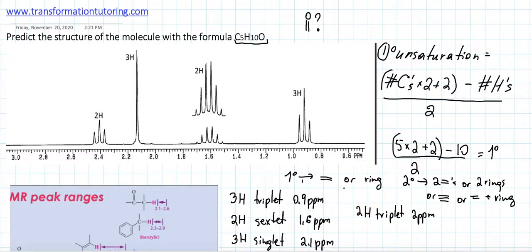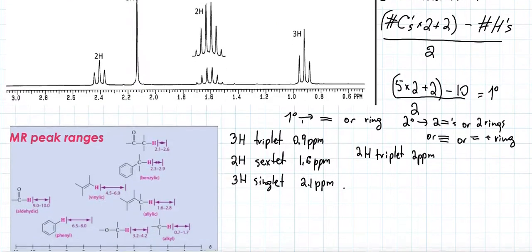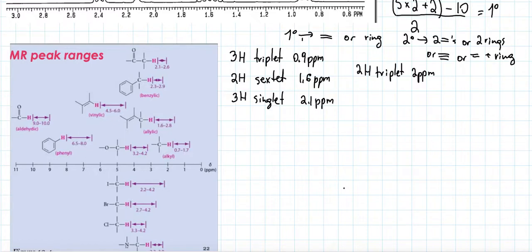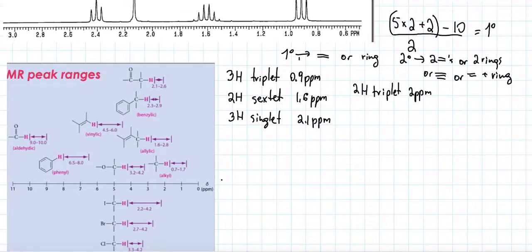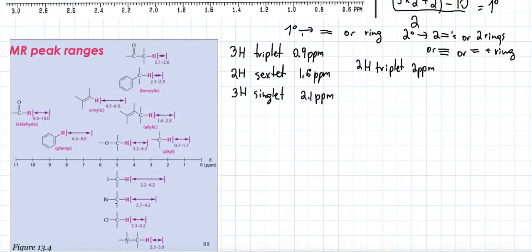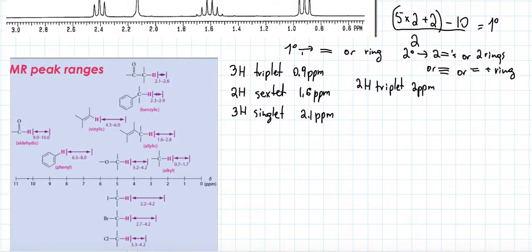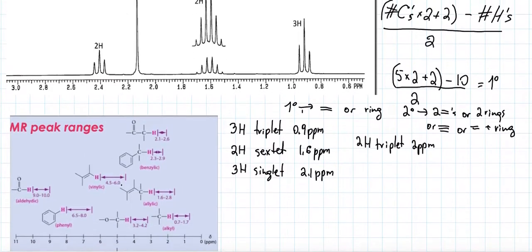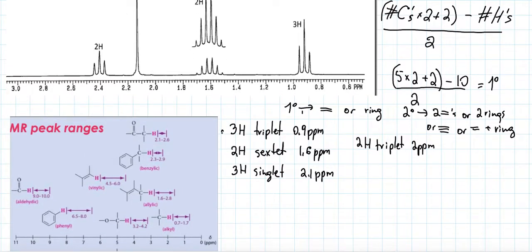Once we've written out all the signals, we look at a ppm reference chart — you can find one online or use the one your professor provided. We'll label our four signals A, B, C, and D and work through them one by one.